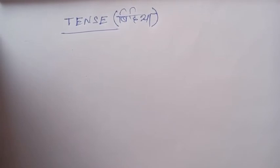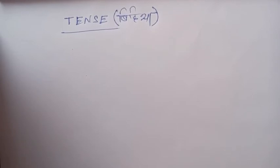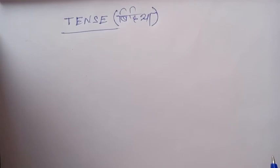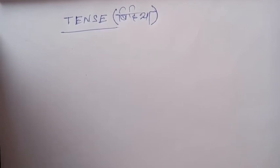These are the tenses: the present tense, which means the language is the best. Second, the past tense. And then the future tense. This is the future tense. The language is the first language.